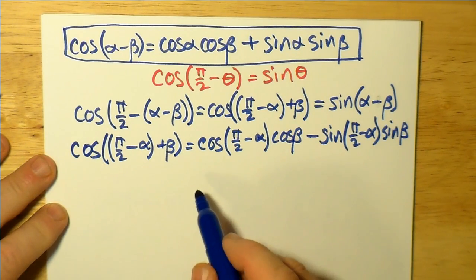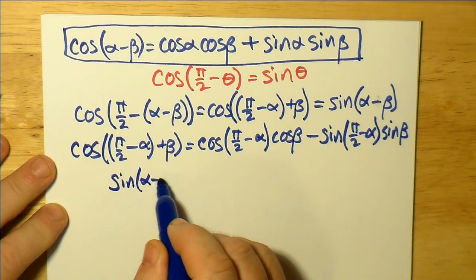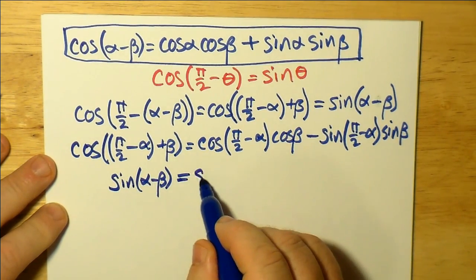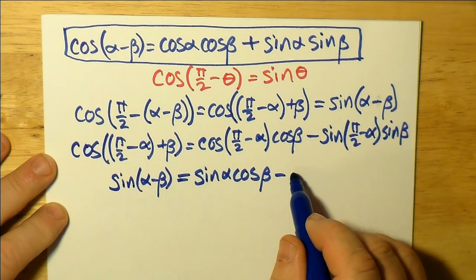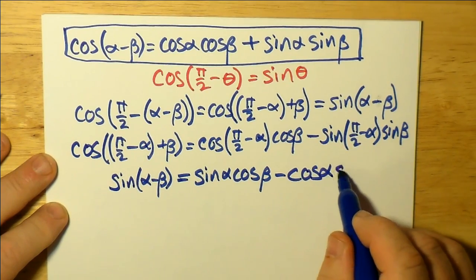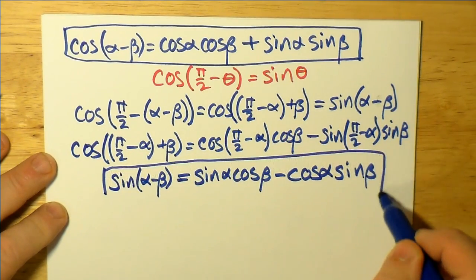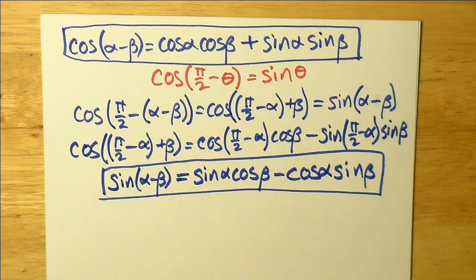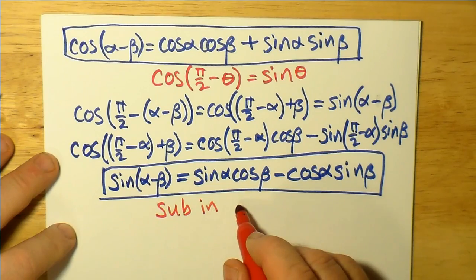Here are the other co-function identities — you may want to stop the video here because we use more than two of these. We use the transformations between sine and cosine and between cosine and sine. So doing cos(π/2 − (α + β)) turns into sin(α − β). cos(π/2 − α) becomes sin(α), giving us sin(α)cos(β), and −cos(π/2 − α) becomes −cos(α), giving us −cos(α)sin(β). So here is our formula for sin(α − β).